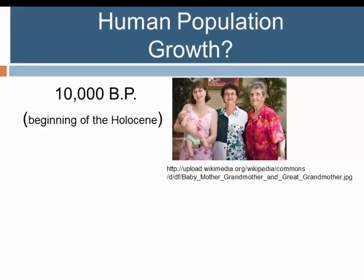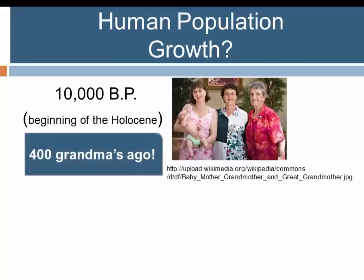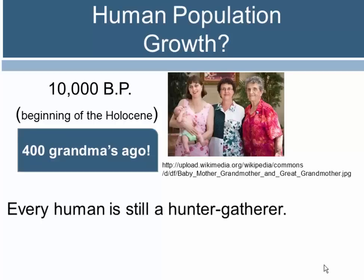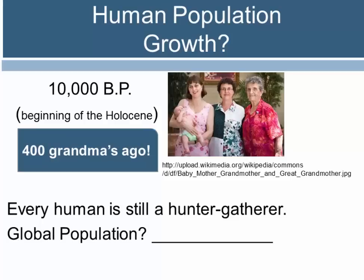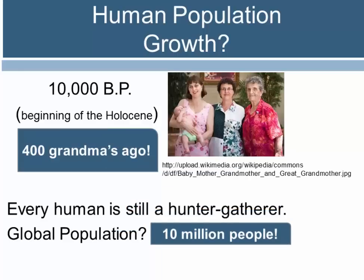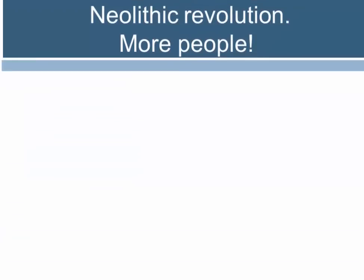If we go back just 10,000 years ago to the beginning of the Holocene — the most recent interglacial, a relatively warm and stable period between ice ages — that's about 400 generations, or 400 grandmothers ago. By 10,000 years ago, every human was still making their living as a hunter-gatherer, and the global population, with all major continents occupied except Antarctica, had grown to 10 million people.